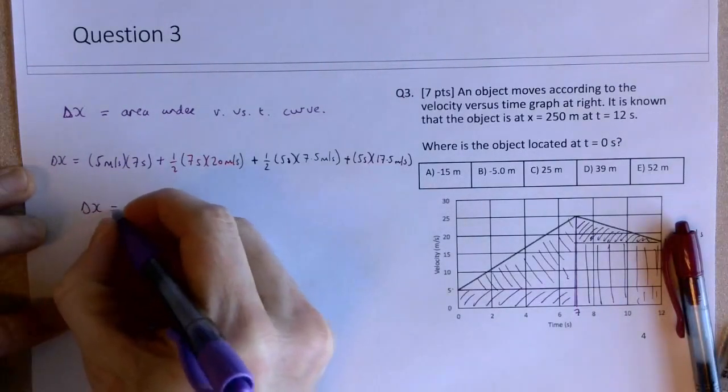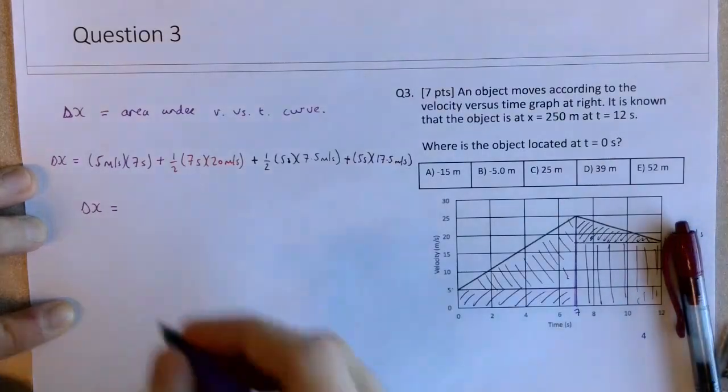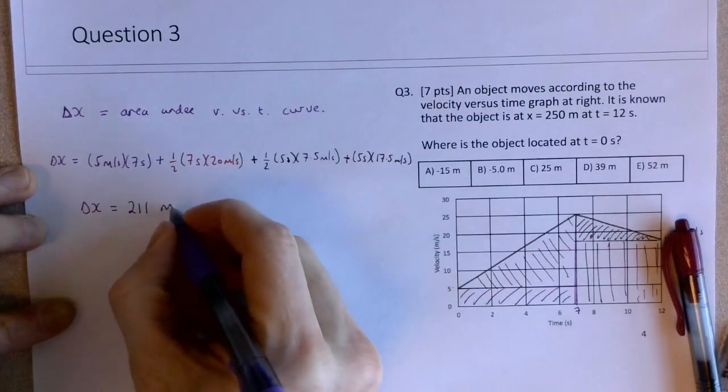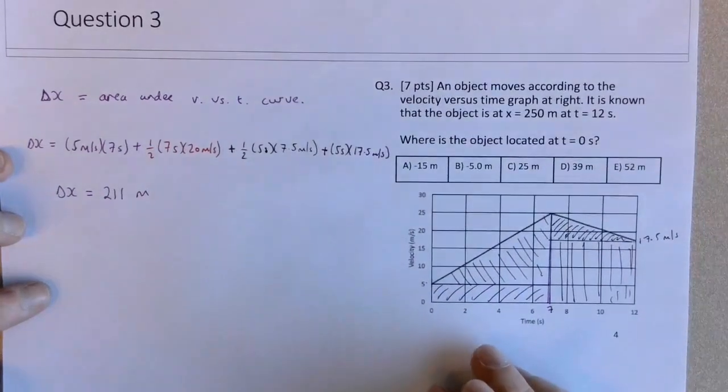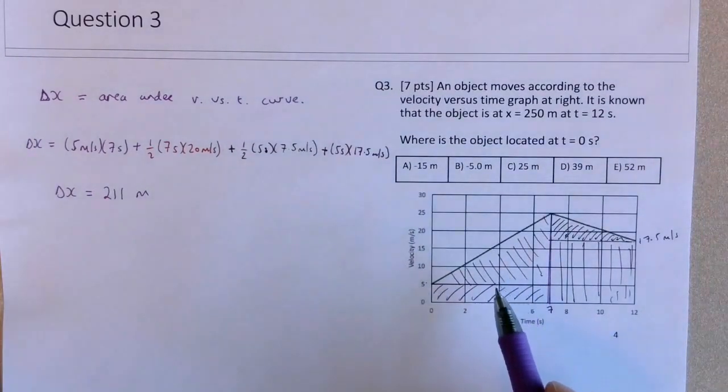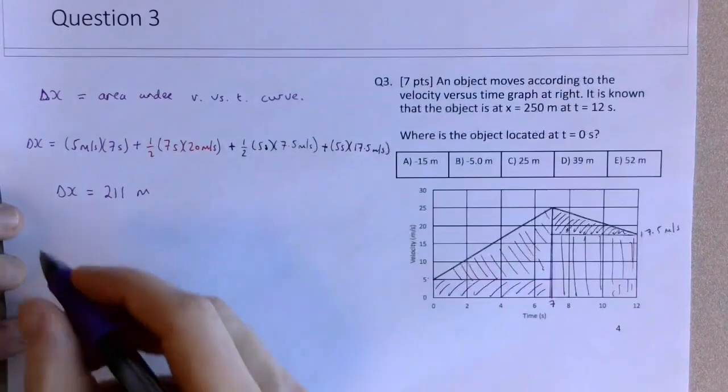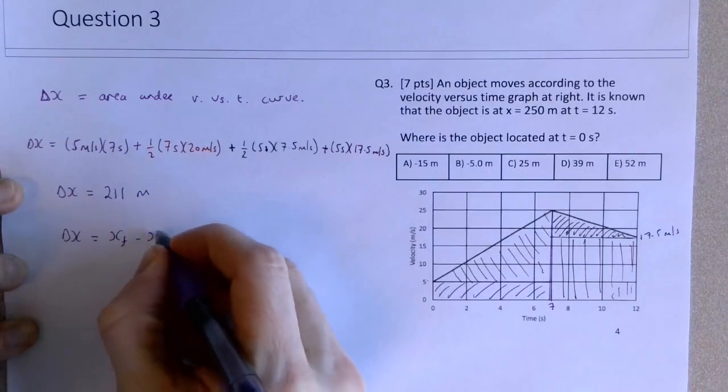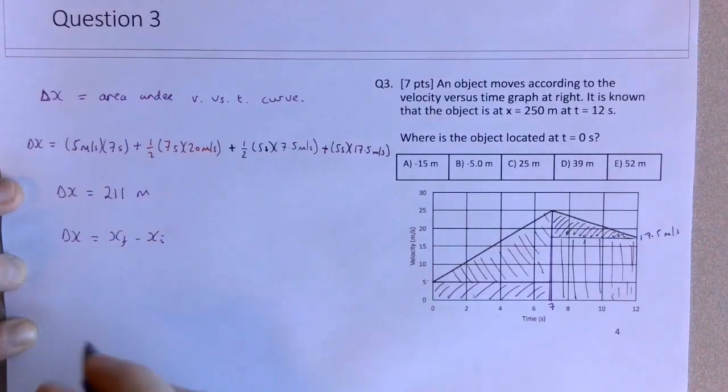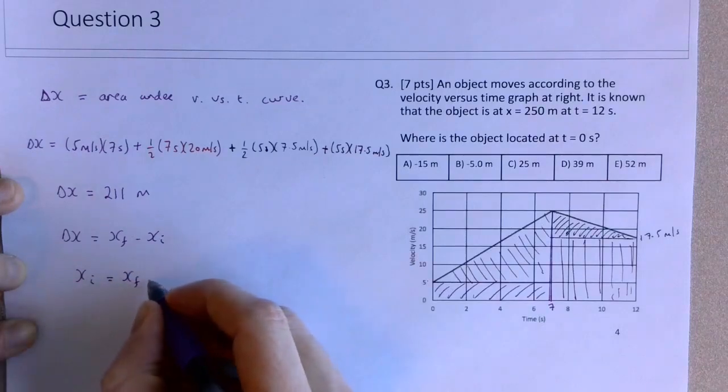So if you work that out in your calculator, this gives you 211 meters. They're all positive velocities, so this should lead to a positive displacement over the entire 12 seconds. And delta x is equivalent to x final minus x initial. So we're trying to solve for x initial in this case. So x initial will be equal to x final minus delta x.